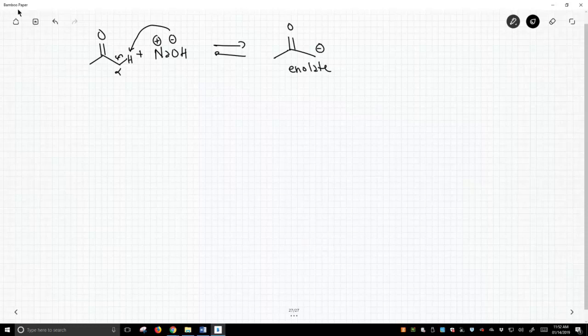And the enolate is simply a carbanion next to a carbonyl. We get H2O. H2O has a pKa of about 16. Ketones have a pKa around 20, and so this is the stronger acid, this is the weaker acid, and our equilibrium pretty strongly favors the left-hand side of the equation.